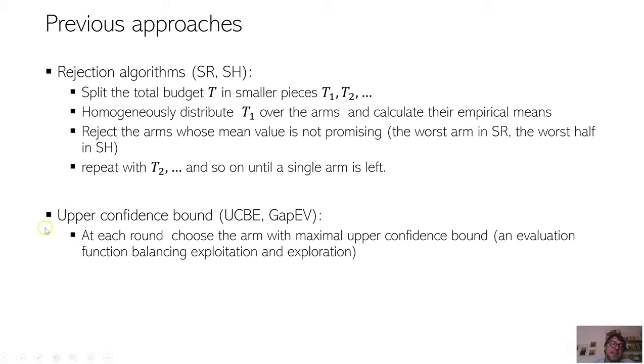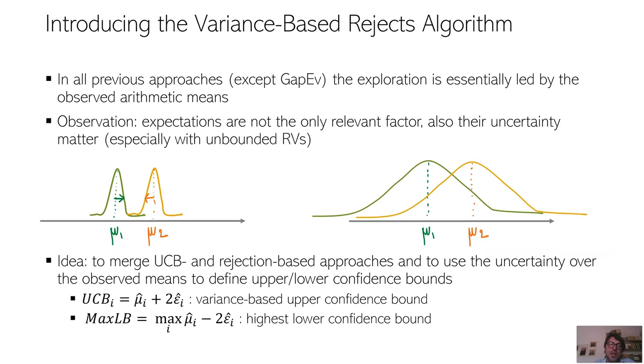Whereas the second family chooses at each single round the arm that has to be pulled. And this is the arm that maximizes the upper confidence bound. Where the upper confidence bound is essentially an optimistic estimation of the expected reward of that arm and balances between exploitation and exploration. So essentially, the previous approach used the mean values to adjust the budget allocation policy on the fly.